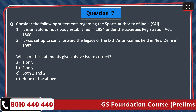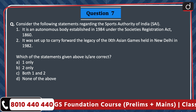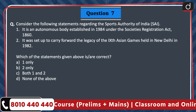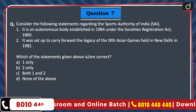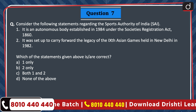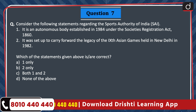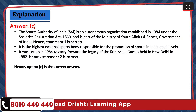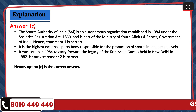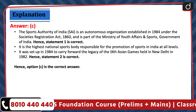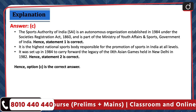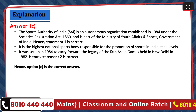Next question. Consider the following statements regarding the Sports Authority of India. 1. It is an autonomous body established in 1984 under the Society's Registration Act 1860. 2. It was set up to carry forward the legacy of the 9th Asian Games held in New Delhi in 1982. The correct answer is option C, both 1 and 2. The Sports Authority of India is an autonomous organisation established in 1984 under the Society's Registration Act 1860, part of the Ministry of Youth Affairs and Sports. It is the highest national sports body responsible for the promotion of sports in India at all levels, set up to carry forward the legacy of the 9th Asian Games held in New Delhi in 1982. Hence, option C is the correct answer.